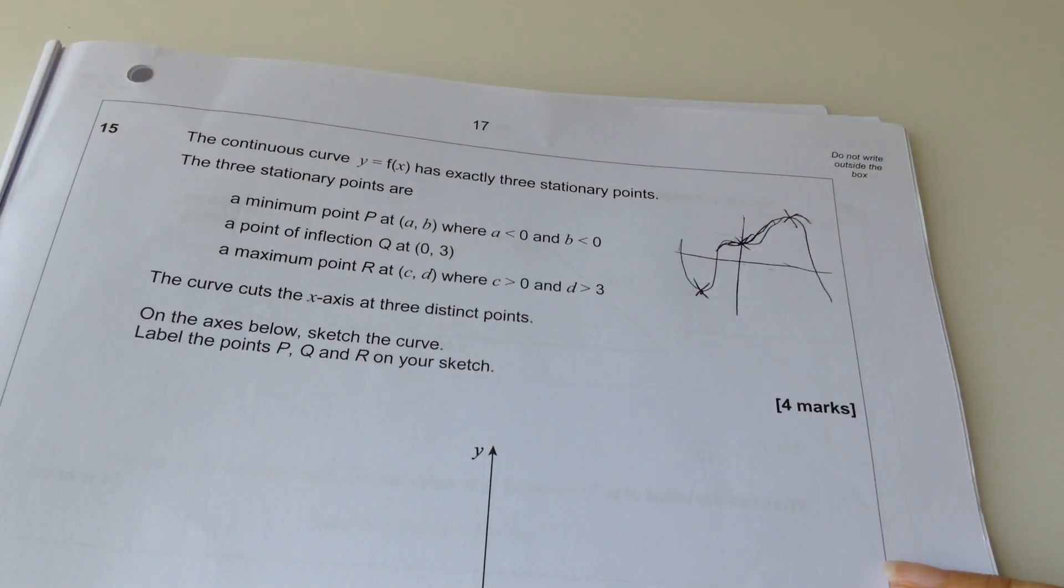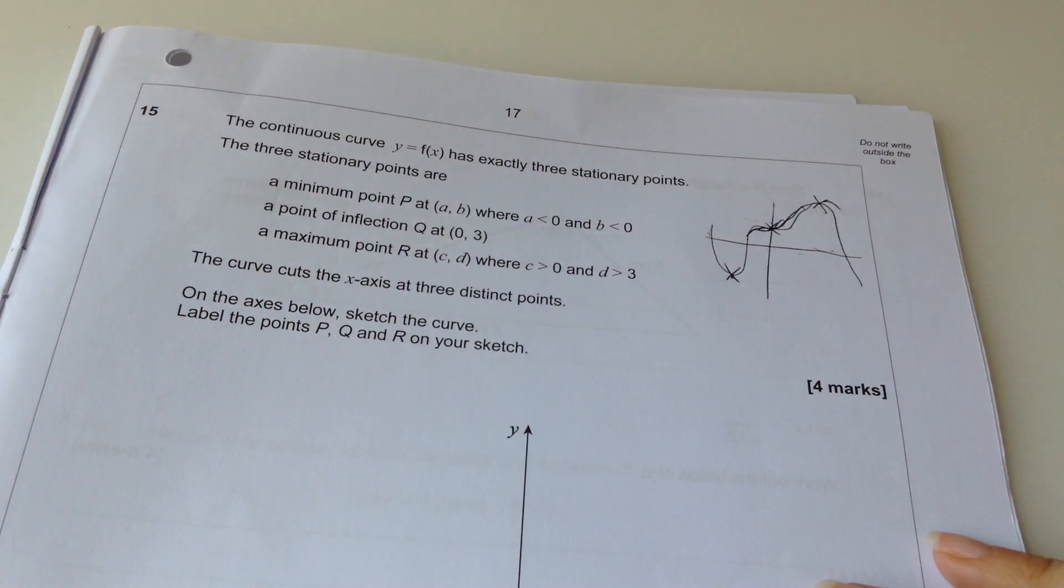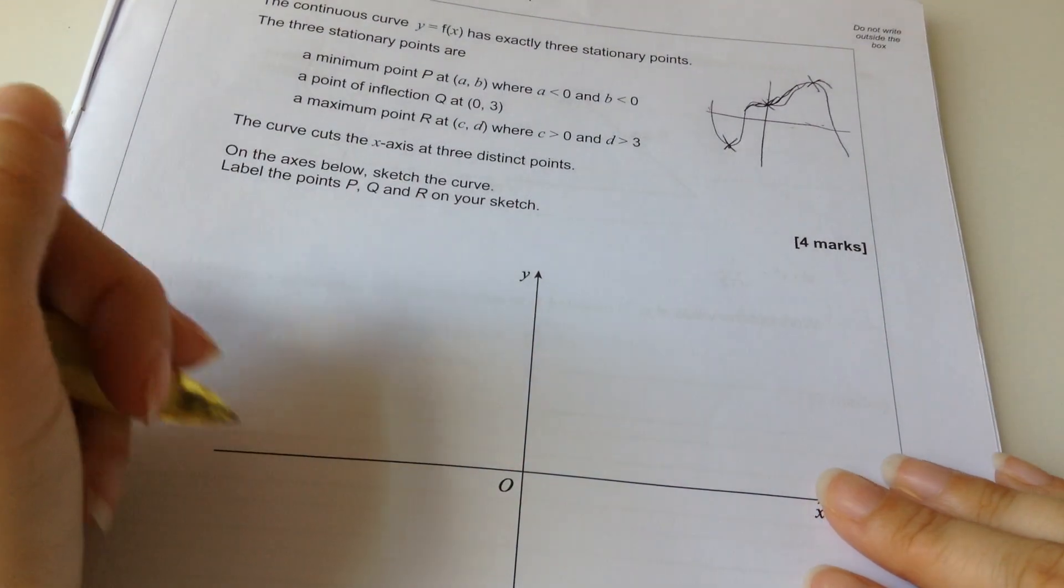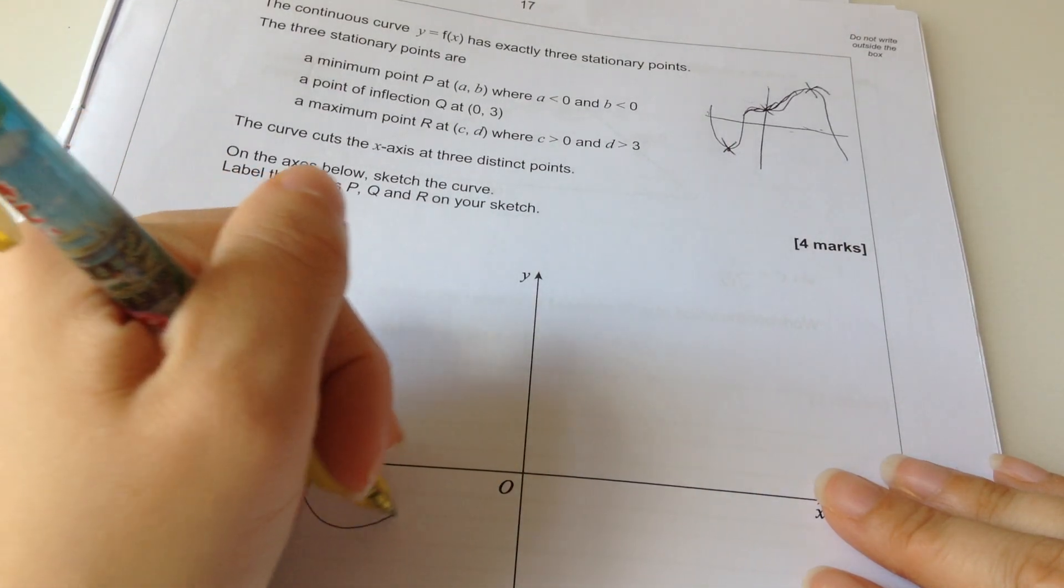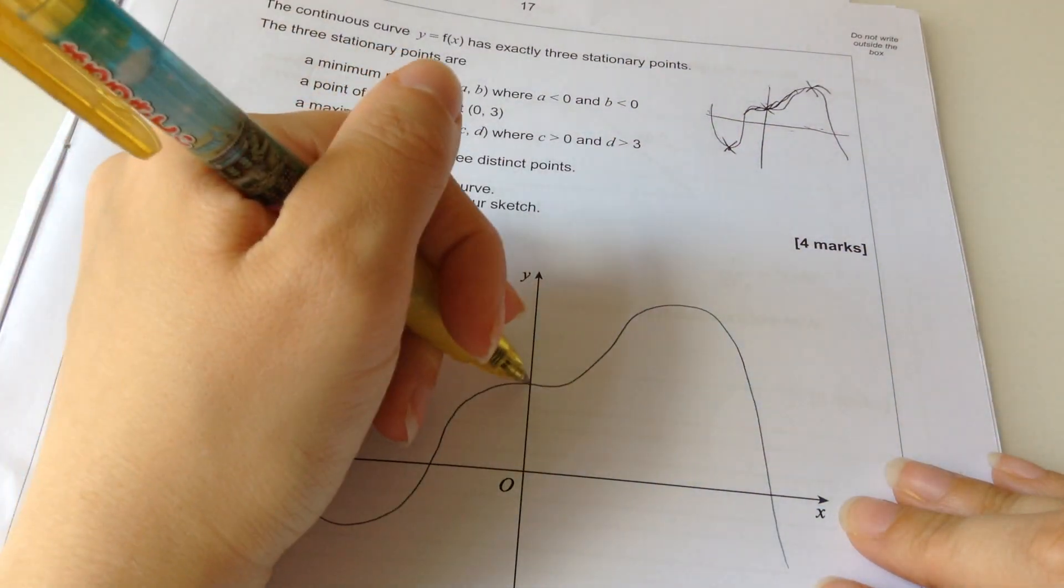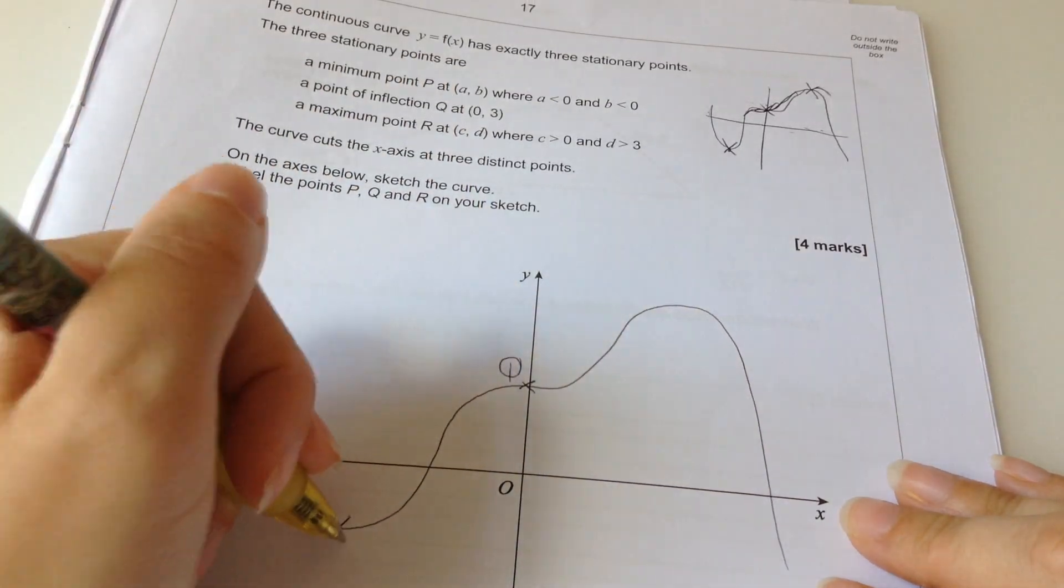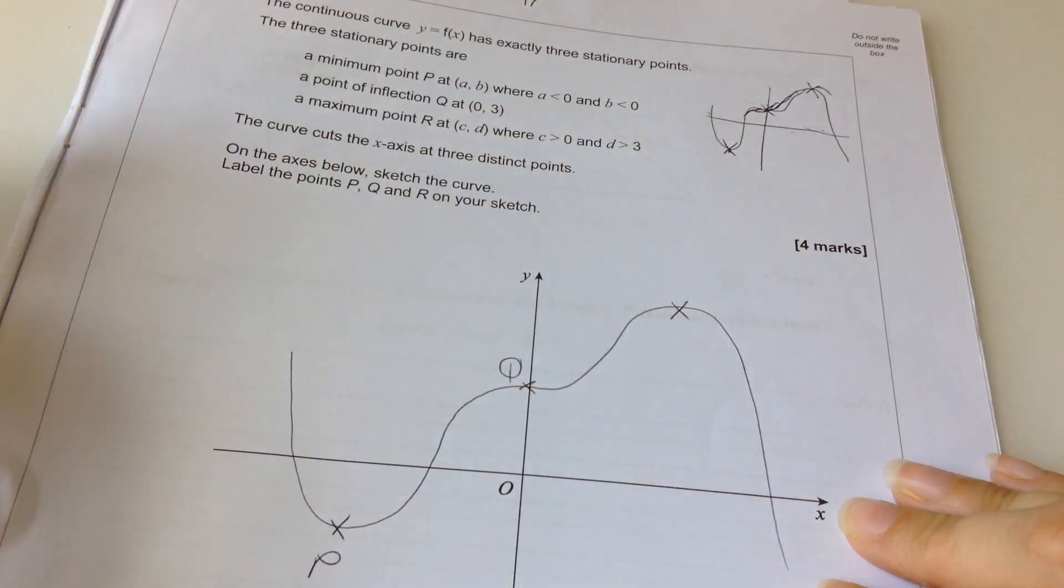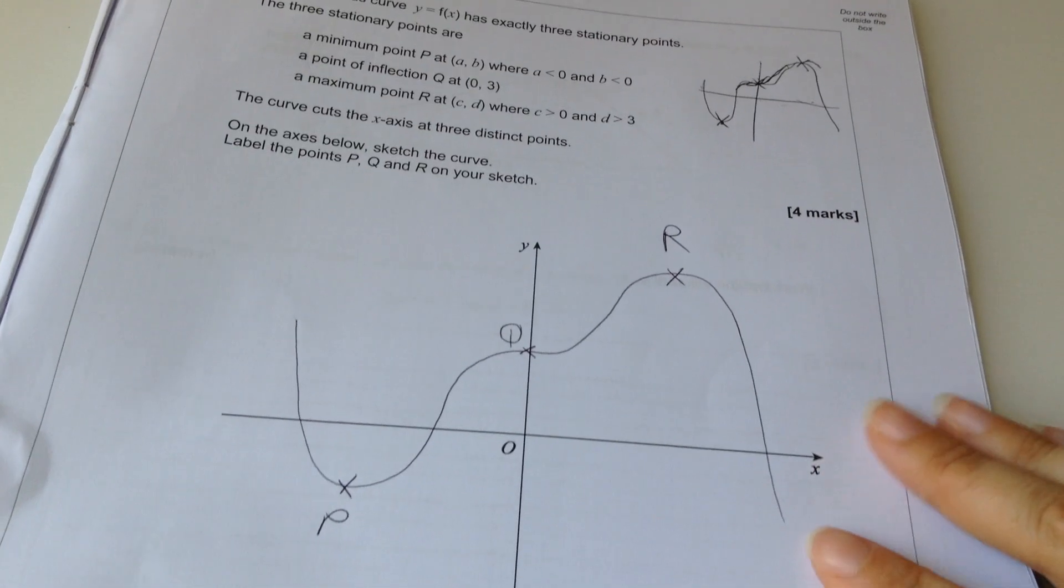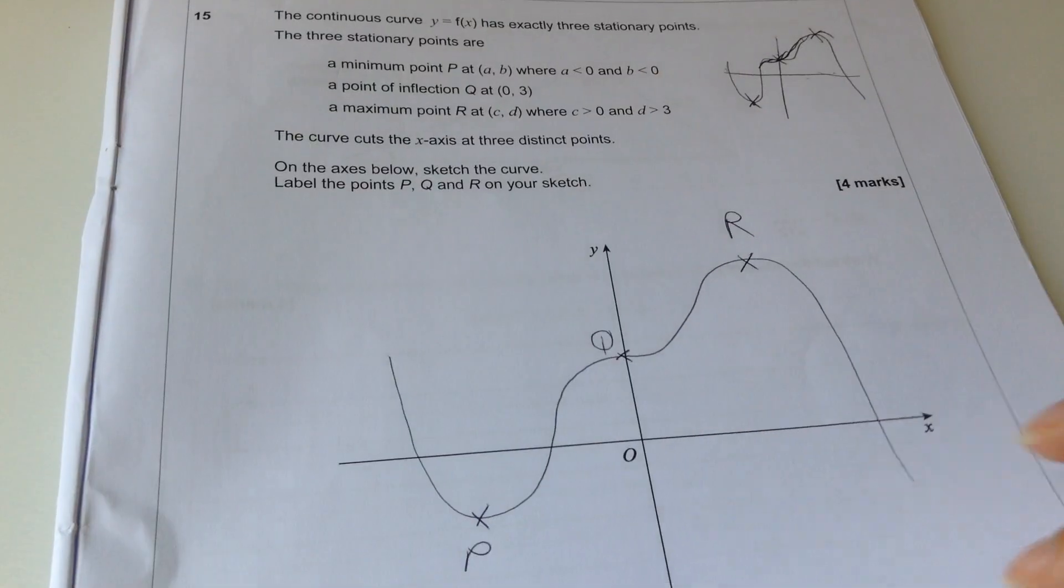So it's got, that's an inflection, then that's a maximum, and that's a minimum. Okay. It's going to look like that. The curve cuts the x-axis at three distinct points. Yeah, I got that. Yeah, good. On the axis below, sketch the curve. Oh! Oh, you actually just, that was the question, sketch the curve. Okay. So that is Q. That is P. That is R. That's all I've got to do. Hmm. That's all right, isn't it? Isn't that okay?